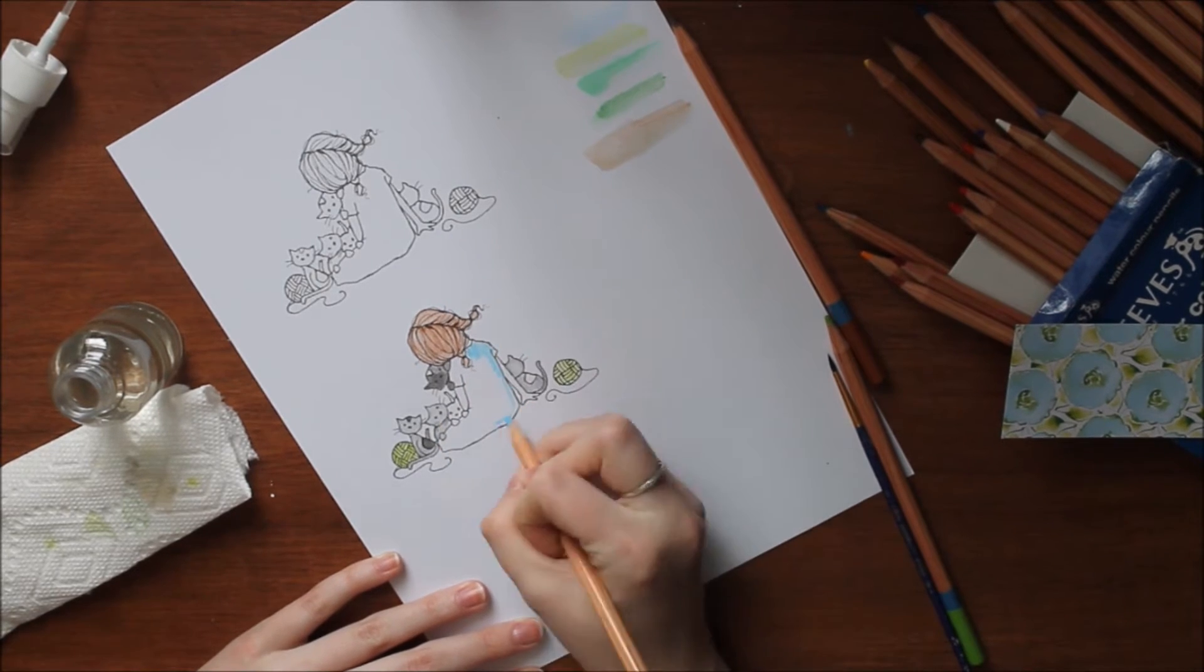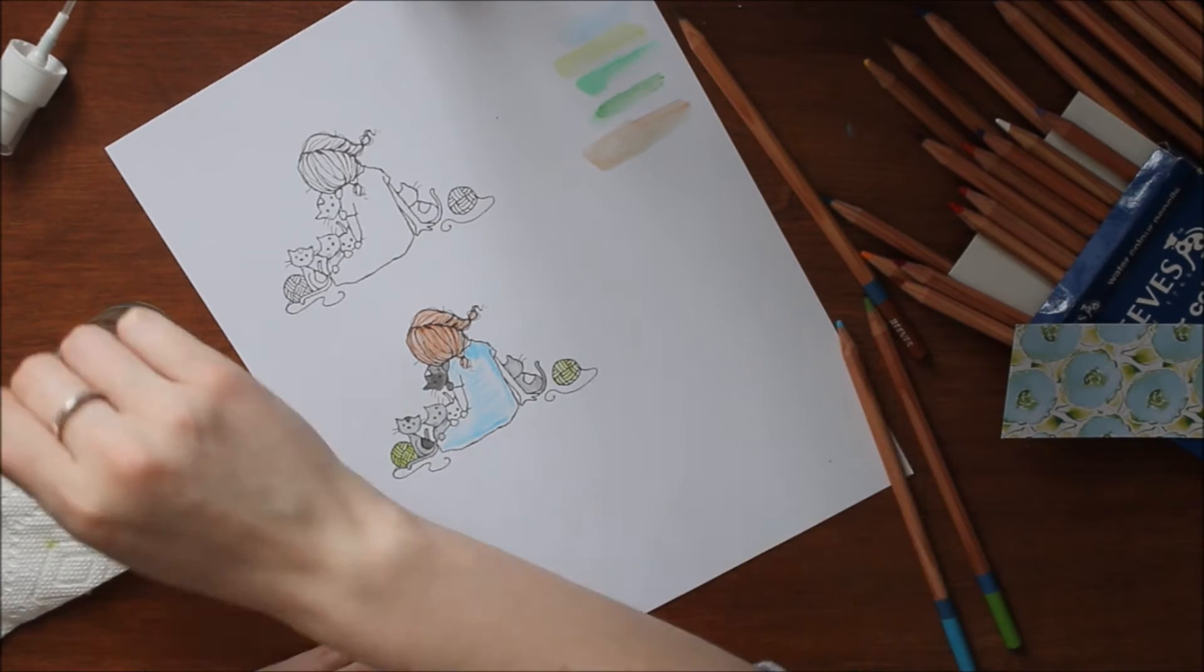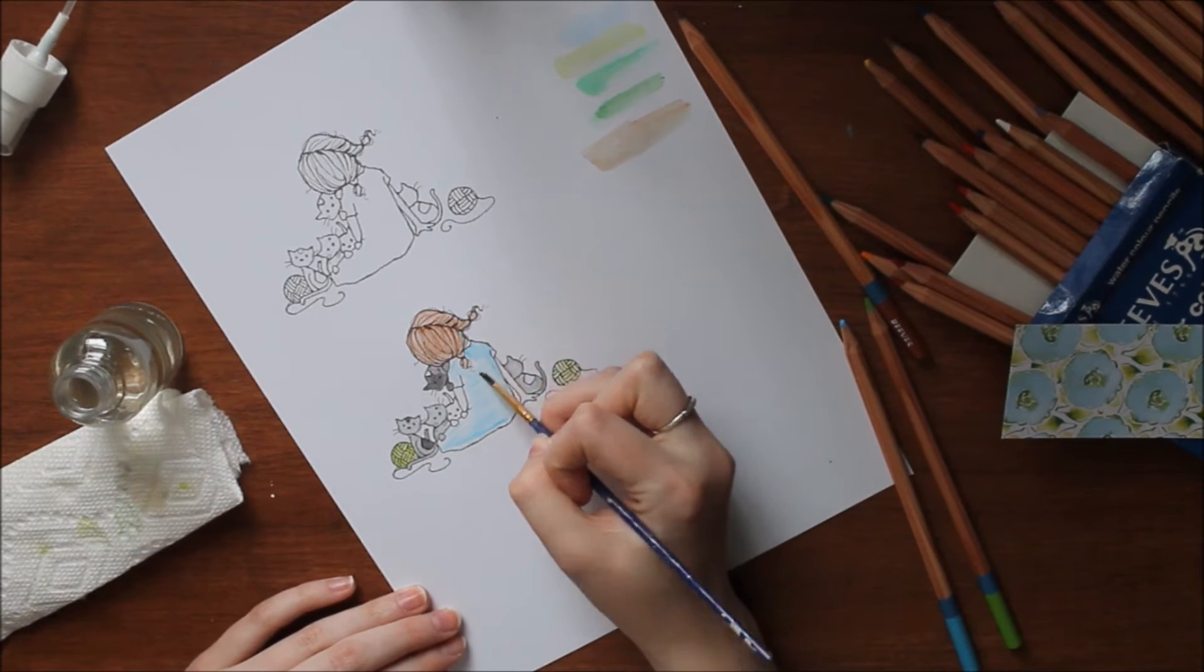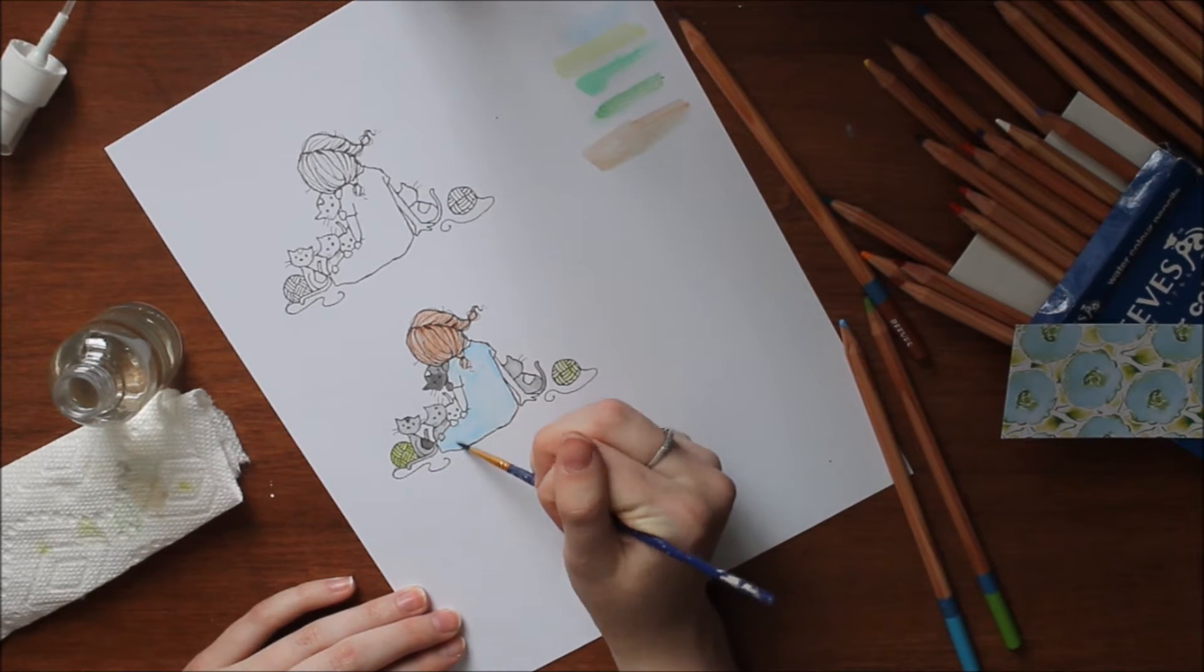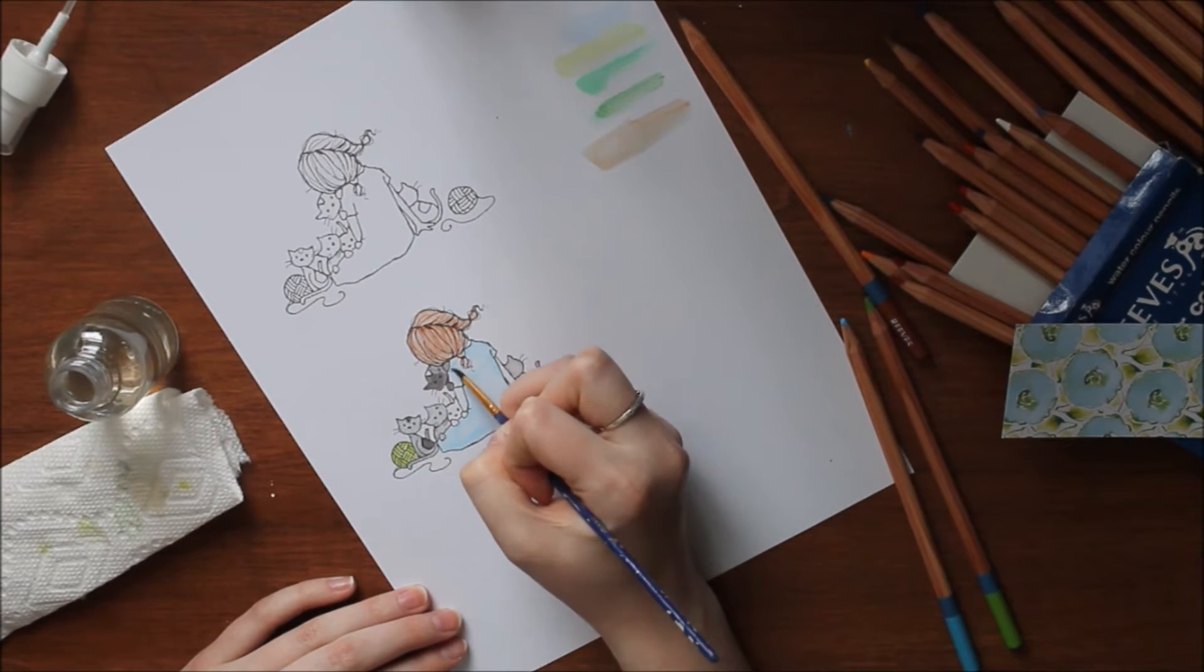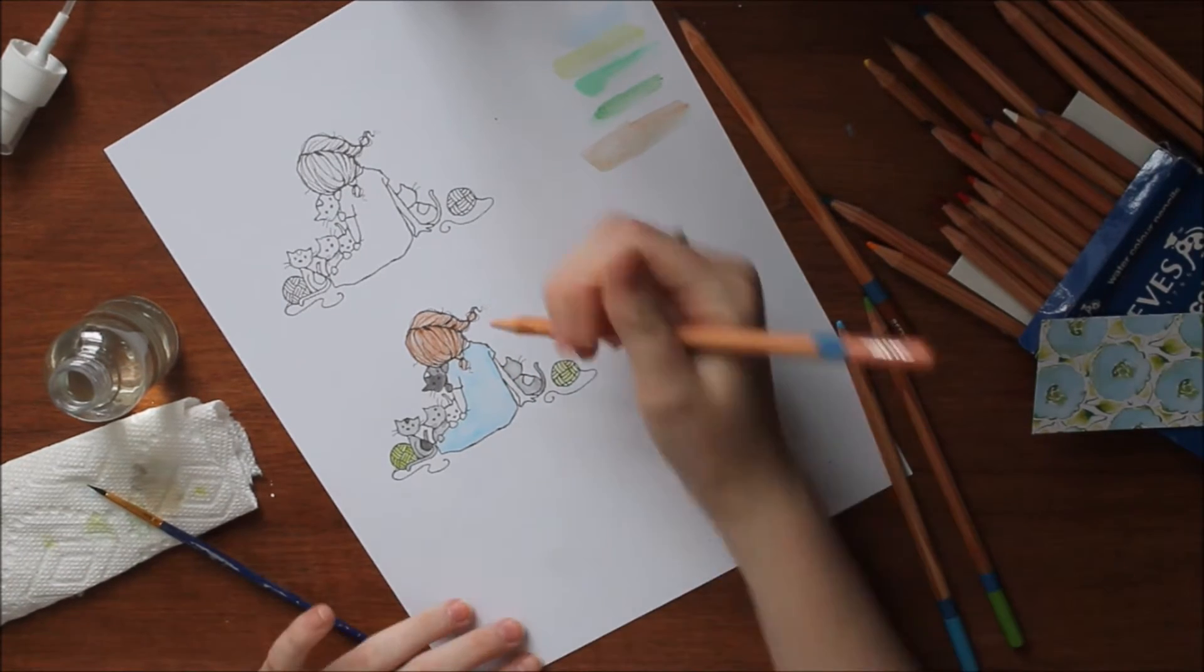With watercolor pencils you want to put some darker areas if you want more concentrated color, like the shadow areas. In the armpits of dresses or where she's sitting on the ground you'll want darker color, so you put more there. But other than that, they're pretty easy to work with and really fun to work with, especially with images like these where there's detail.